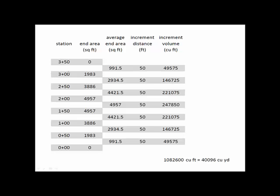So again in more detail let me show you how this works. From 0 to 50, 0 plus 00 to 0 plus 50 I have a distance of 50 feet. At 0 plus 00 I had an end area of 0. At 0 plus 50 it was 1983. The average of those two is 991.5 square feet. The average of the end areas 0 plus 50 and 1 plus 00 is 2934. And it increases as we get closer to the middle of the stockpile. And then it decreases as we get down to the other end.